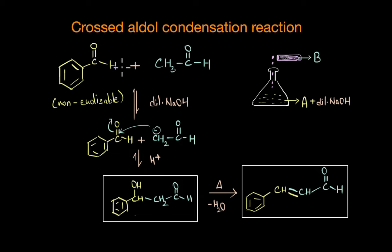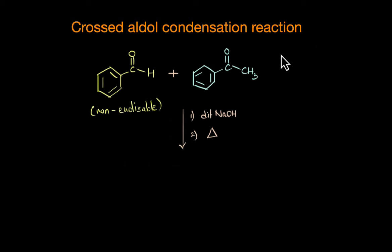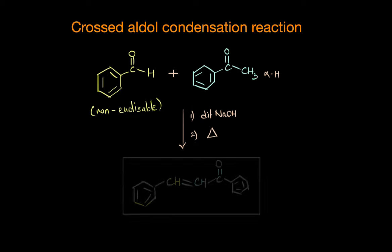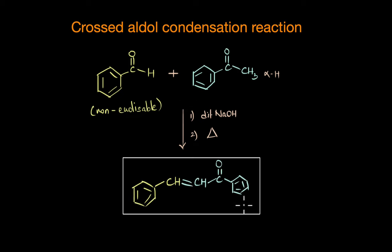We can also use ketones successfully in crossed aldol condensation. For example, benzophenone reacting with benzaldehyde — again only one reactant has the alpha hydrogen atom — and on crossed aldol condensation we get this particular alpha-beta unsaturated compound in major amounts. To reiterate, the only thing we need to ensure for a successful crossed aldol condensation is that only one reactant has an alpha hydrogen atom and the other reactant is used in large excess.